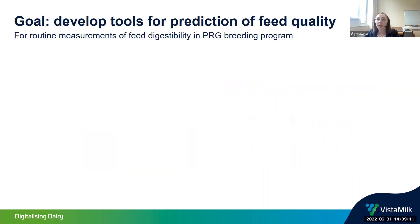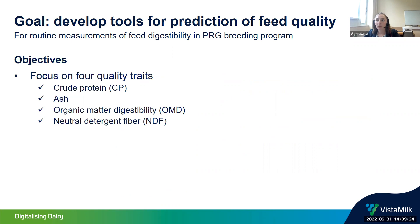This was the goal of my project: to develop tools for prediction of feed quality such that they could be used for routine measurements of feed digestibility in the perennial ryegrass breeding program. The objectives were to focus on four quality traits — crude protein, ash, organic matter digestibility (OMD), and neutral detergent fiber (NDF). OMD tells you the fraction of feed that is digestible to the animal, whereas NDF tells you the undigestible fraction — they are complementary traits.